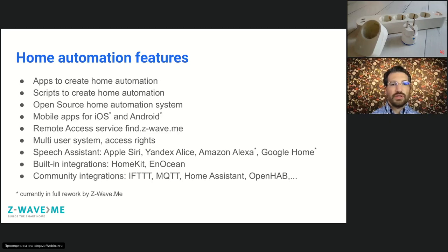The home automation engine is open source, published on GitHub, and you can contribute to it. The basic web interface is also open source, and the expert user interface made for advanced users and installers is also open source and available on GitHub. Of course, Z-Way has various mobile apps — you can find several apps in app stores that support Z-Way, some made by us and some by the community.